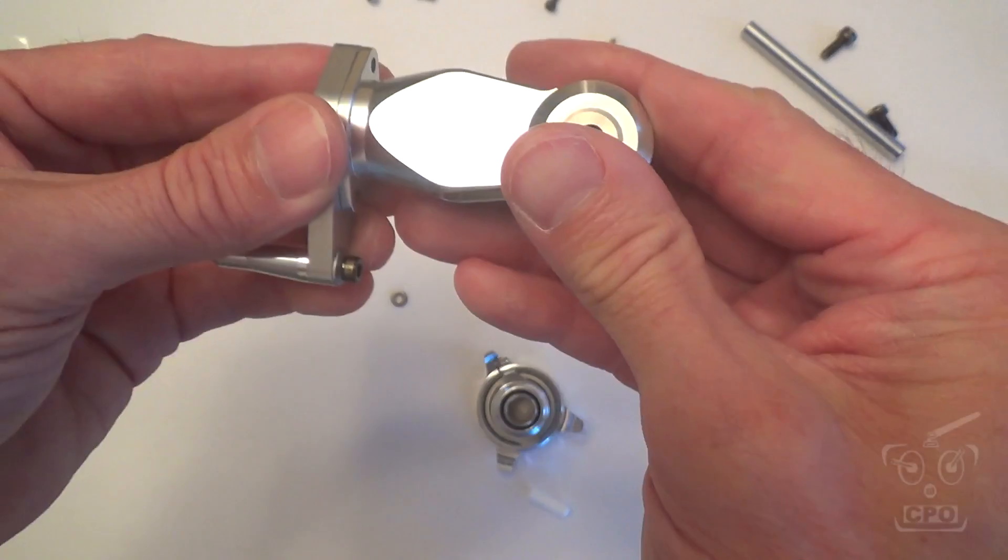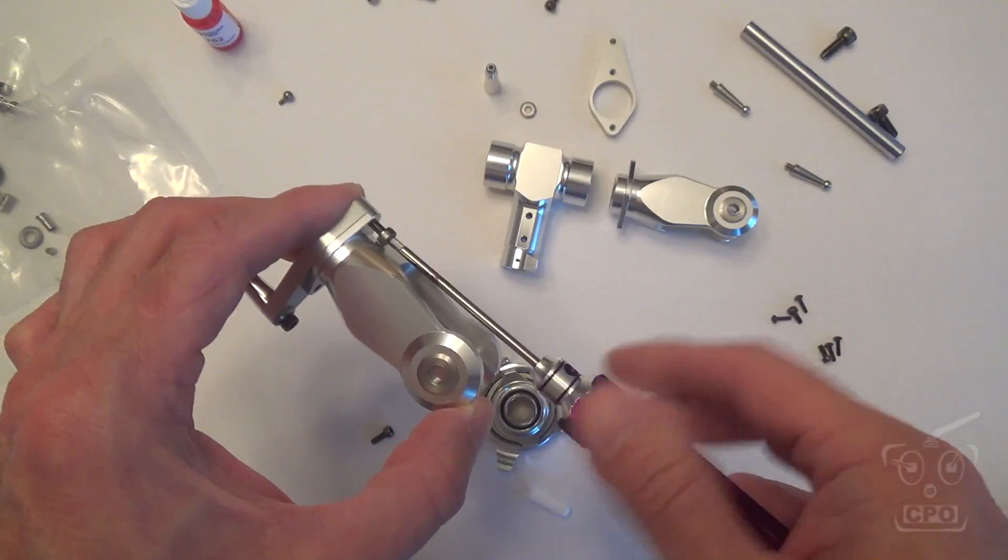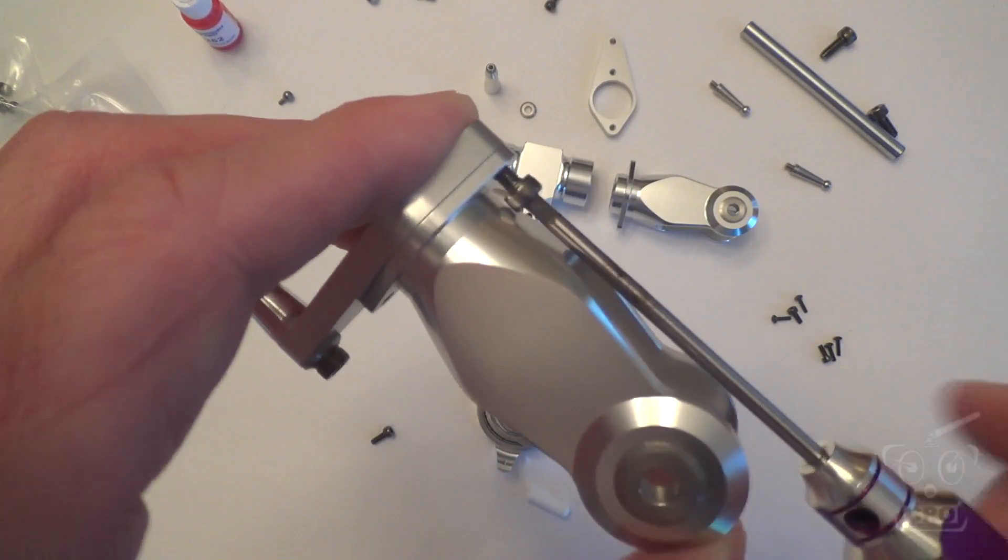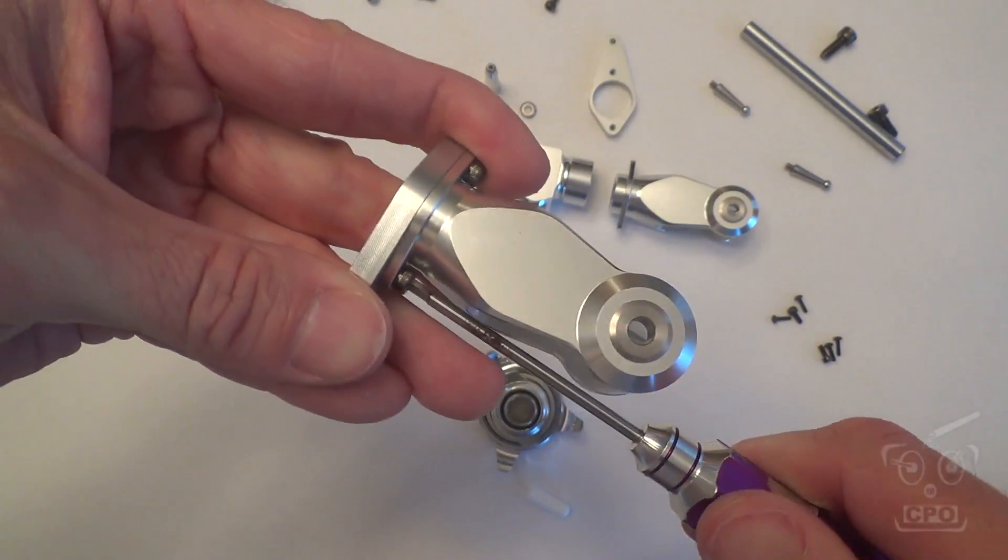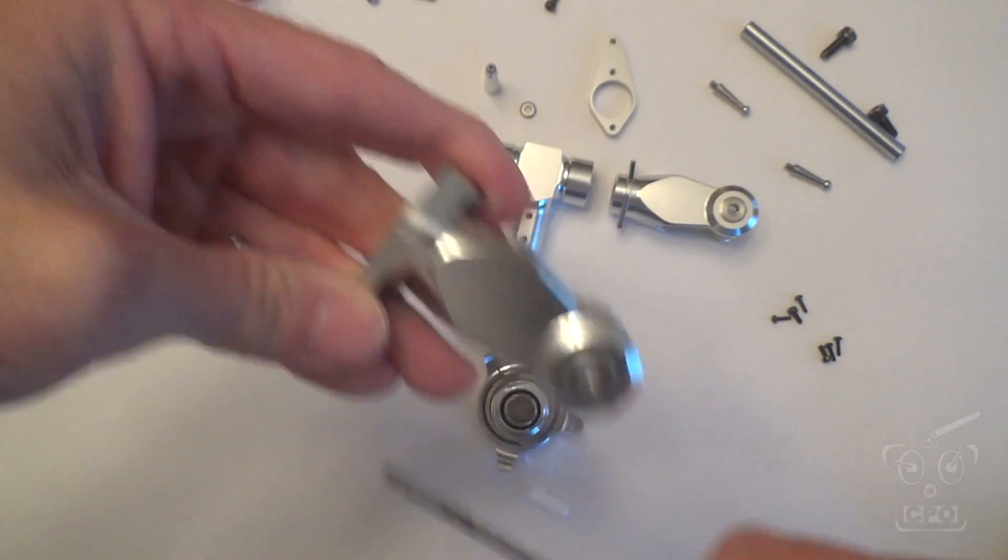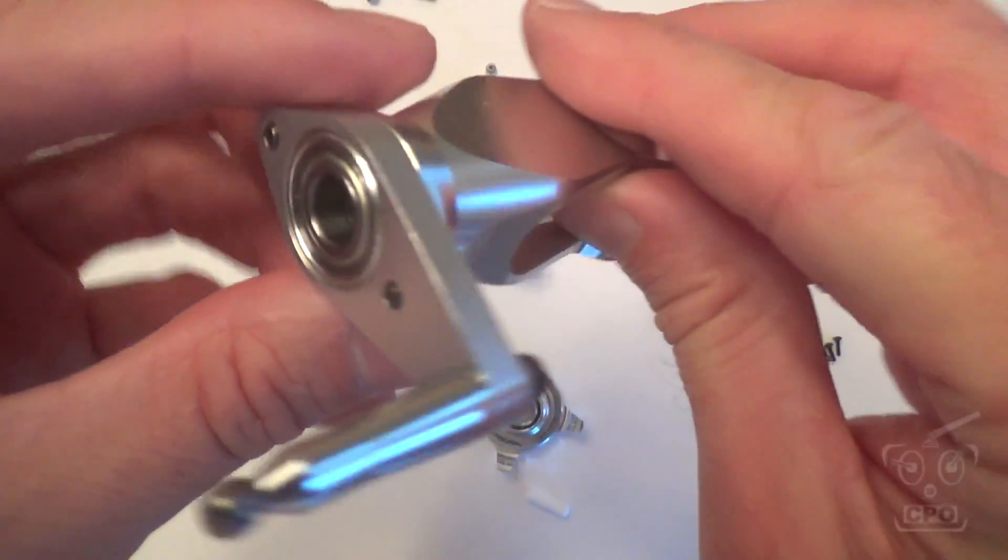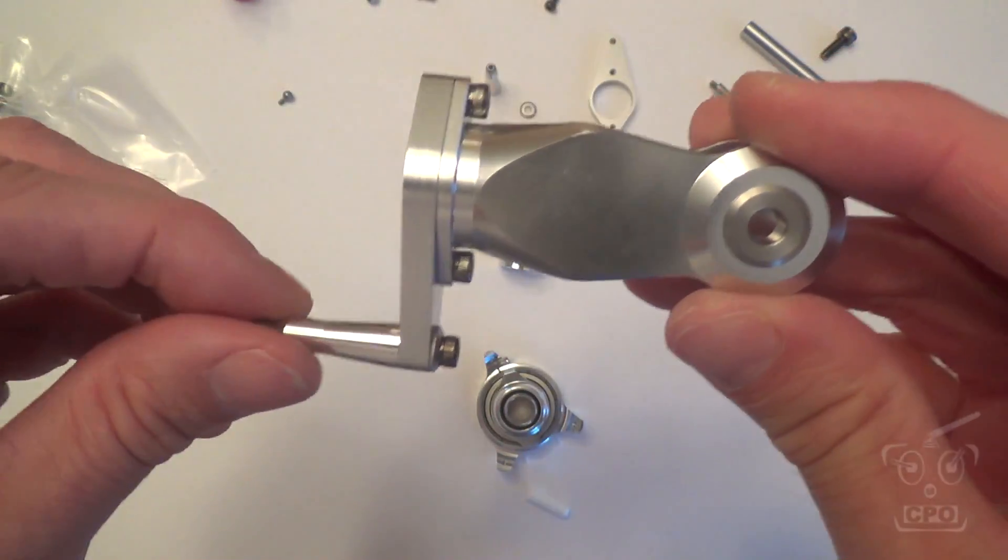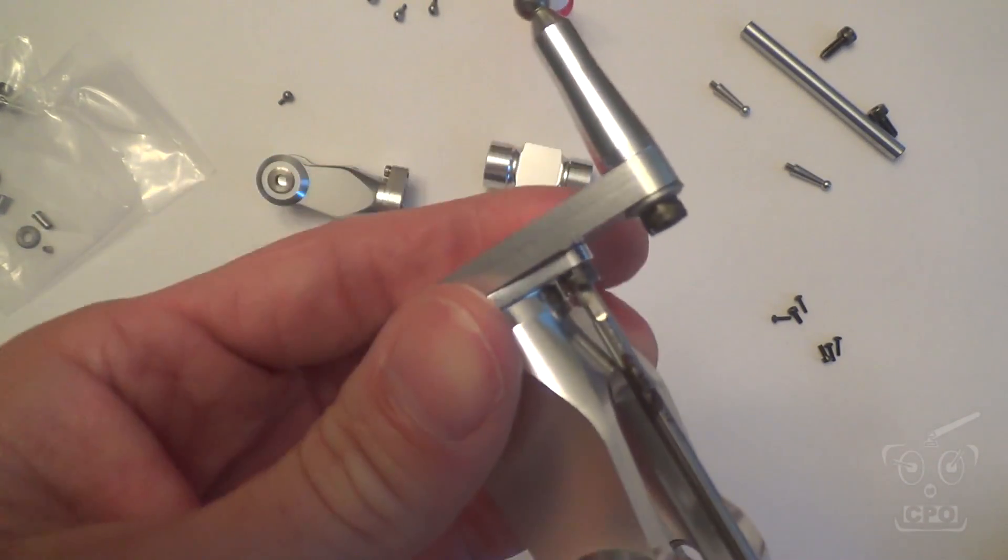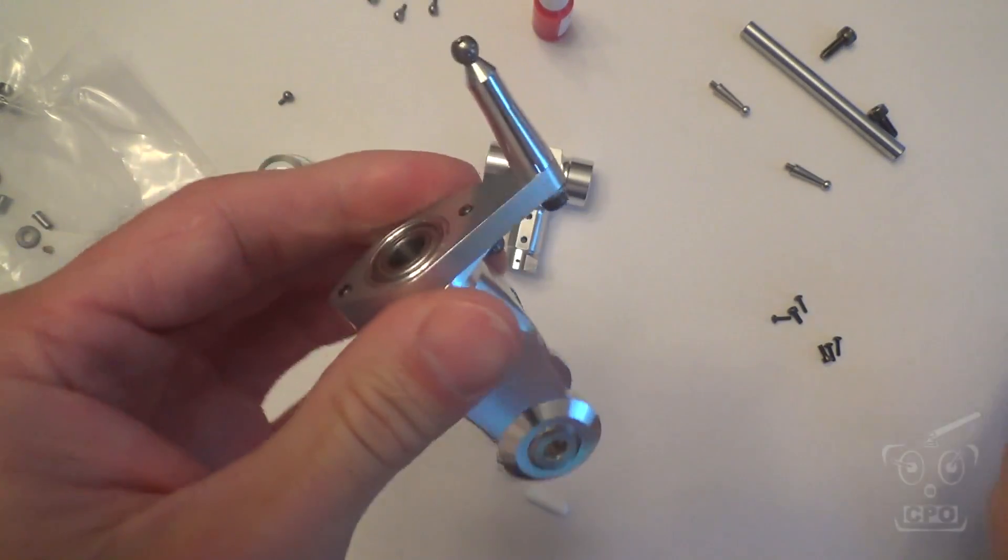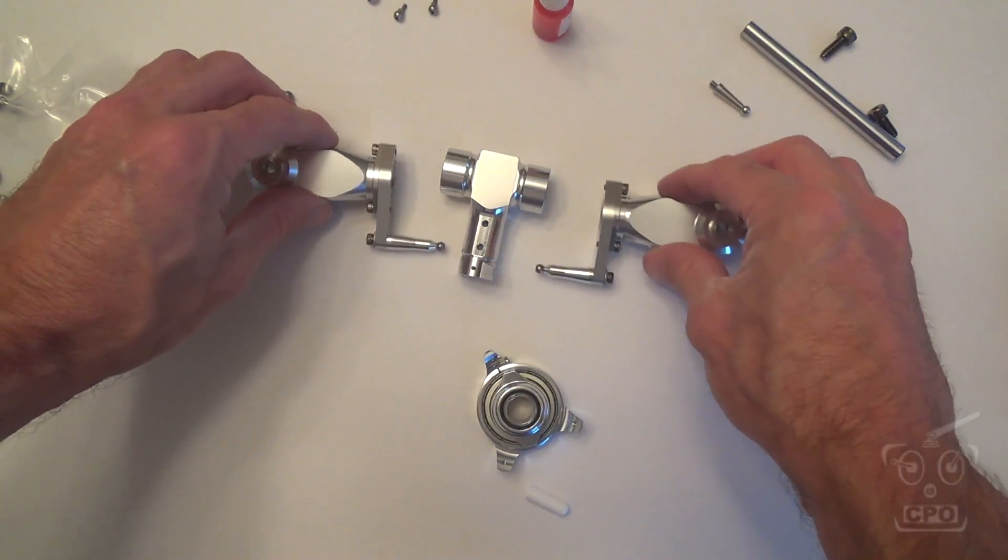Set that on the end of the grip and then using the eight millimeter screws to screw that down. Now I'm not going to show you me putting thread lock on every single part. Just know if it's metal screws going into metal parts, it's getting thread lock period. There's no other way around it. I will probably show you that periodically to remind you, but thankfully I will spare you from watching me put thread lock on every single screw.